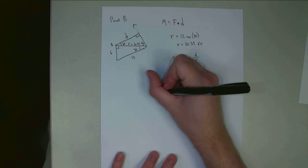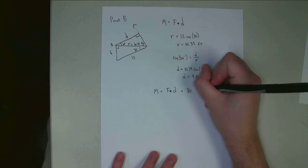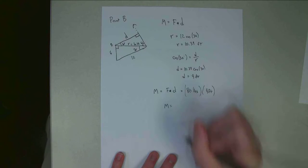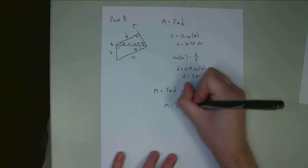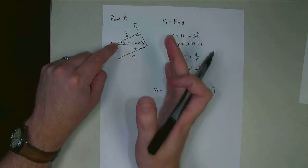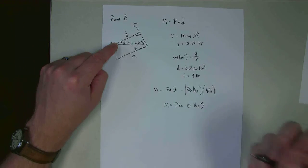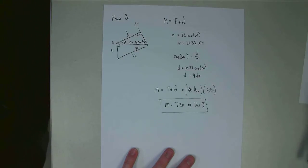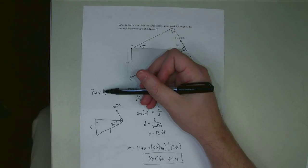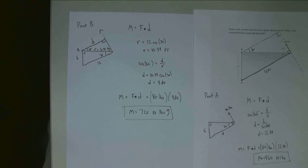So the moment is equal to force times distance: 80 pounds times 9 feet gives a moment of 720 foot-pounds. If I think about the rotation — holding down point B — this whole thing would rotate counterclockwise, so it's a positive moment. That is our answer. The moment about point A is 960 foot-pounds, and the moment about point B is 720 foot-pounds. Thank you for watching, and I hope to see you again.